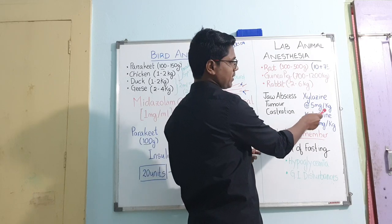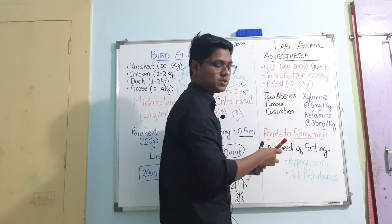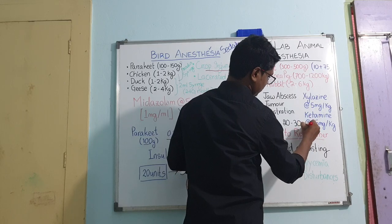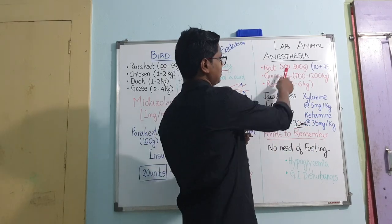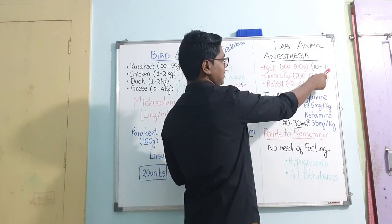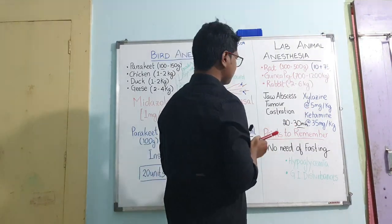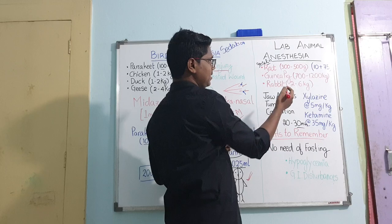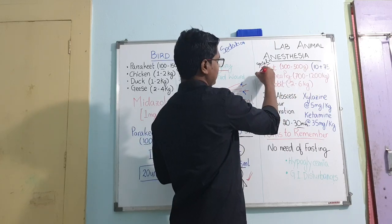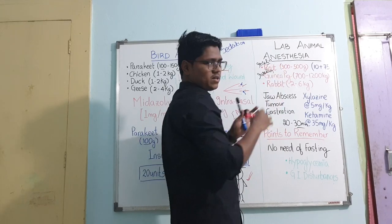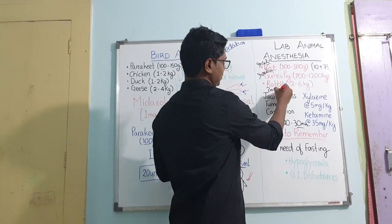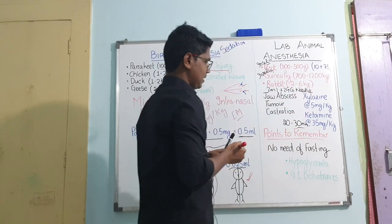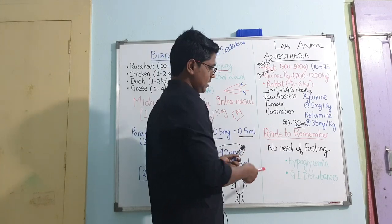The anesthetic protocol uses xylazine and ketamine in combination. For rabbit: xylazine 5 mg per kg and ketamine 35 mg per kg body weight, producing 20–30 minutes of good anesthesia. For rat: xylazine 10 mg per kg and ketamine 75 mg per kg body weight — use an insulin syringe. For guinea pig under 1 kg, use an insulin syringe; for larger guinea pigs, use a 2 ml syringe with a 24-gauge needle.